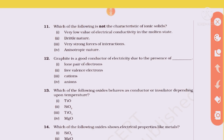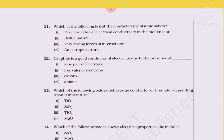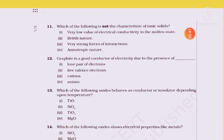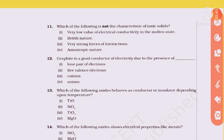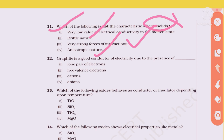Question 11: Which of the following is NOT a characteristic of ionic solids? Options include: very low value of electrical conductivity in molten state, brittle nature, very strong forces of attraction, and anisotropic nature. Let's check which one is incorrect for ionic solids.